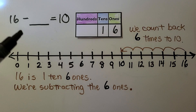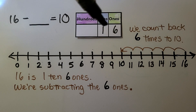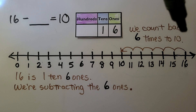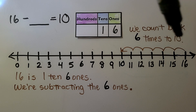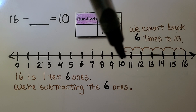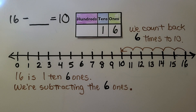How many do we need to take away from 16 to make a 10? We can look at a place value chart. We have 1 ten and 6 ones for 16. We can count back 6 times on a number line: 1, 2, 3, 4, 5, 6 — that brings us to 10. So 16 is 1 ten and 6 ones; we're subtracting the 6 ones so there would be a 0 in the ones place.